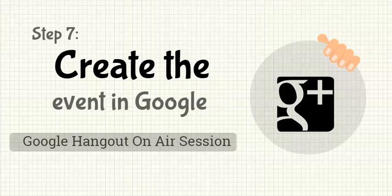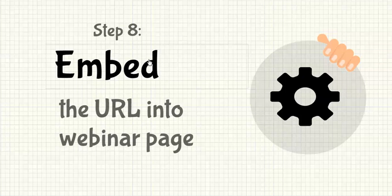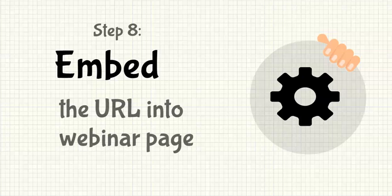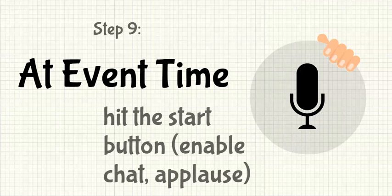Step seven is actually creating the event. You'll go into Google Plus and create the event and the Google Hangout on Air session — I'll show you how in a moment. Once you create the event, you'll get a piece of embed code that you can use to embed the video onto your webinar page. This is an extremely important piece of the puzzle that must be in place before you start your webinar.